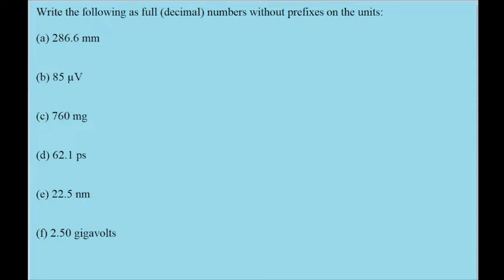So probably the easiest way to do this is to keep in mind what those unit prefixes mean in terms of powers of 10. So in the case of milli, milli is a thousandth. So what that means is that the value without the prefix is multiplied by 10 to the power of negative 3.